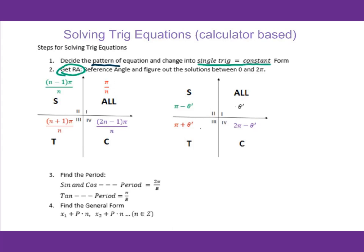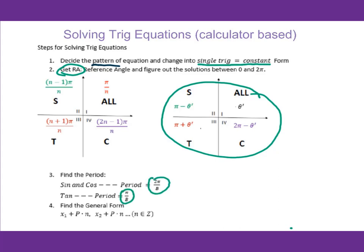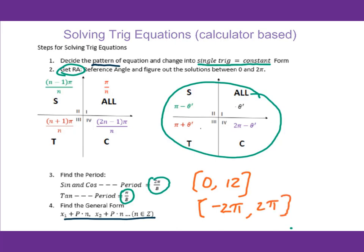Then get the reference angle. Since this is calculator-based, use this to figure out the two solutions. Then find the period: sine and cosine use 2π over b; for tangent, period equals π over b. Then get the general form so you can figure out the solutions in a specific domain, like from 0 to 12 or from negative 2π to 2π.